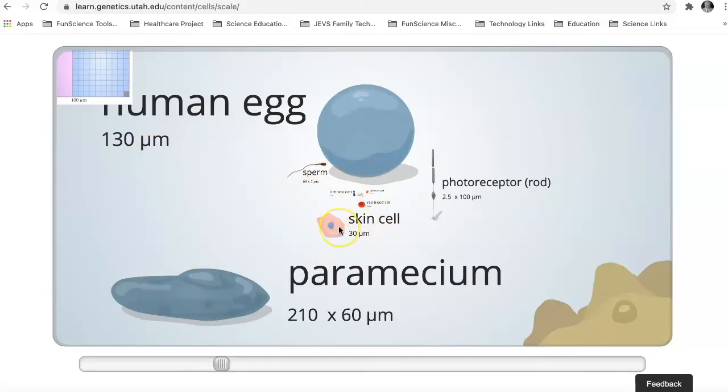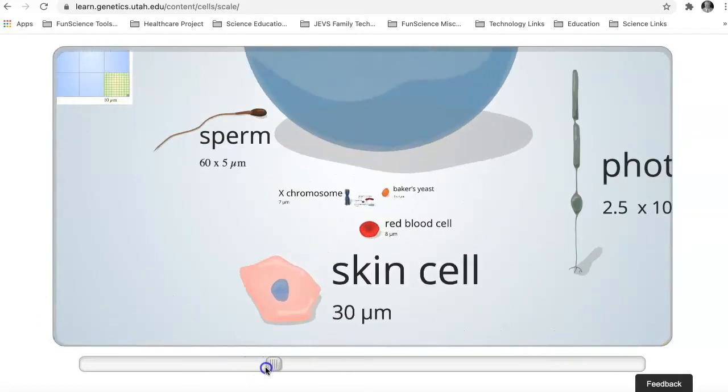And the skin cells, similar to what might be inside your cheek, is here at 30 microns. So let's keep going. So cells are about this big. Here's a red blood cell, which is about eight microns big.